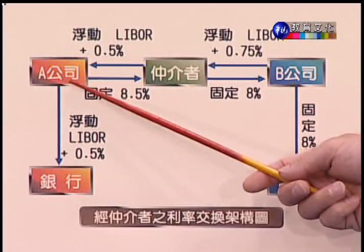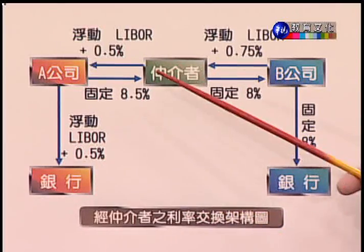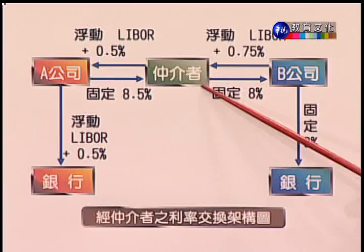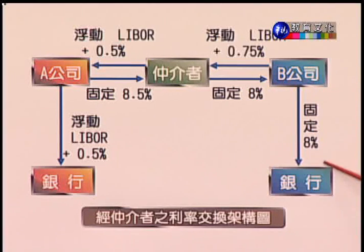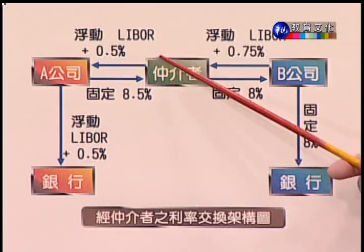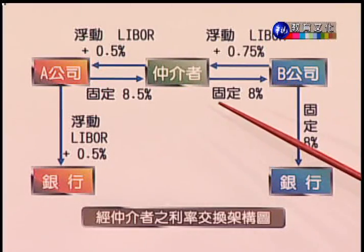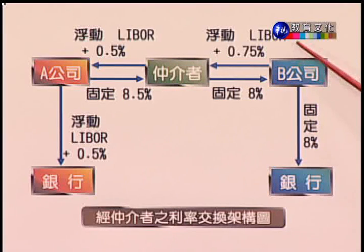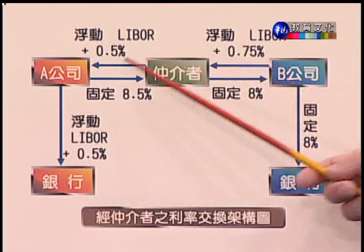我们来看这张图表。A公司借浮动比较便宜，但有固定利率的需求；B公司借固定利率比较便宜只要8%。所以仲介机构就有进场安排的机会。仲介机构安排B公司去借固定利率，也支付它固定利率；仲介机构安排A公司来借浮动利率LIBOR加0.5，所以仲介公司就支付给A公司这个浮动利率。但A想要固定因为资产持有的关系，B想要浮动因为资产跟投资的关系，所以仲介机构就安排这两个来进行交换。